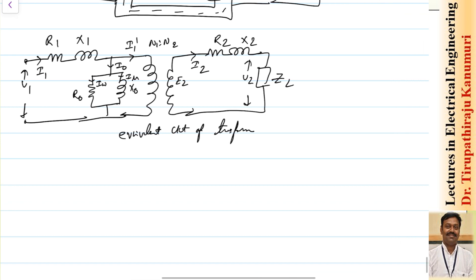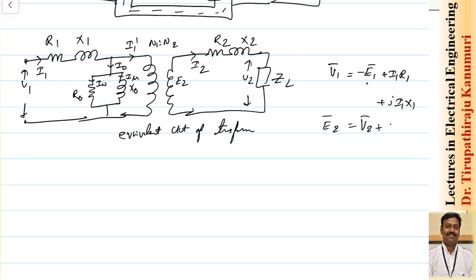The circuit equations are: V1 = -E1 + I1R1 + j·I1X1 for the primary side. For the secondary side: E2 = V2 + I2R2 + j·I2X2. These will be revisited in the phasor diagram discussion.